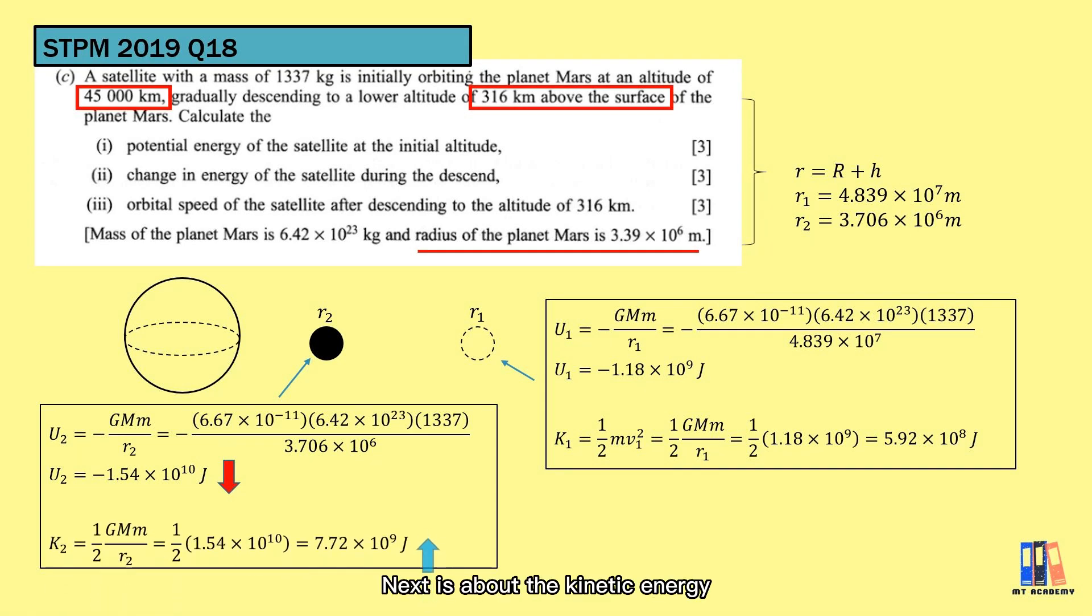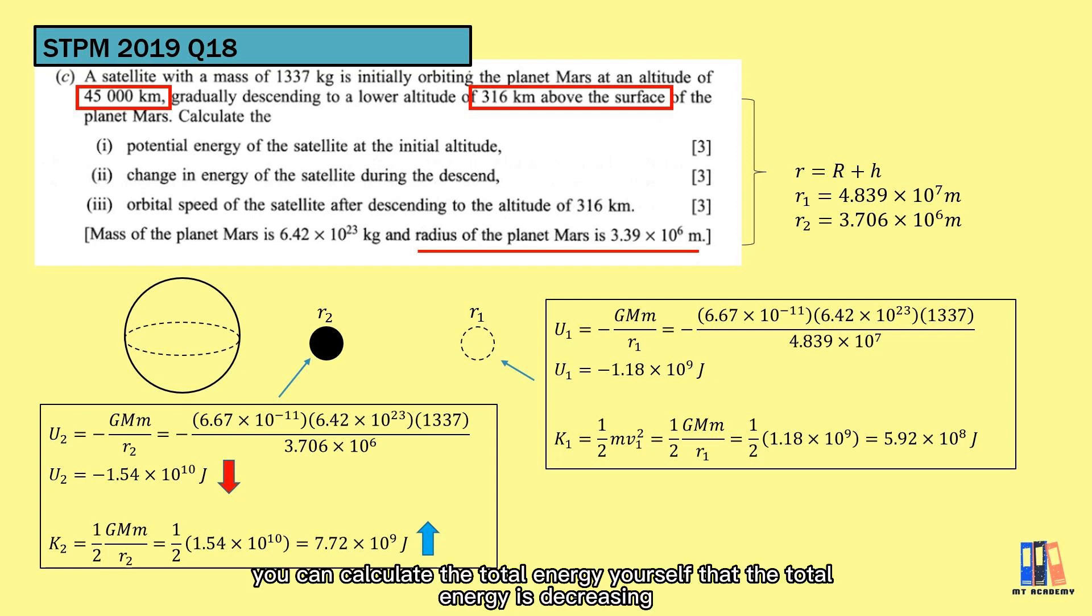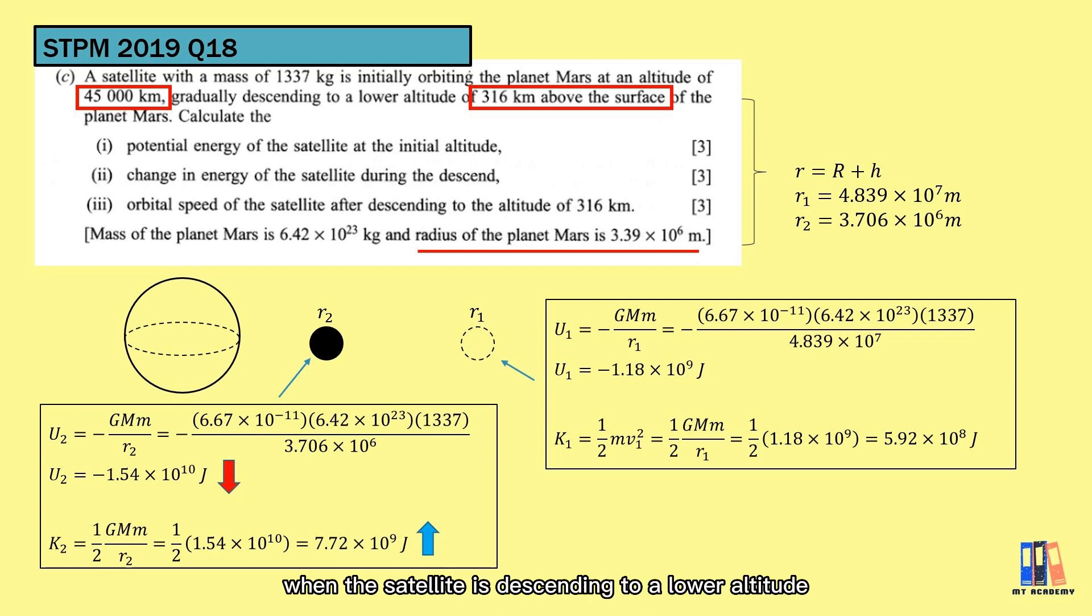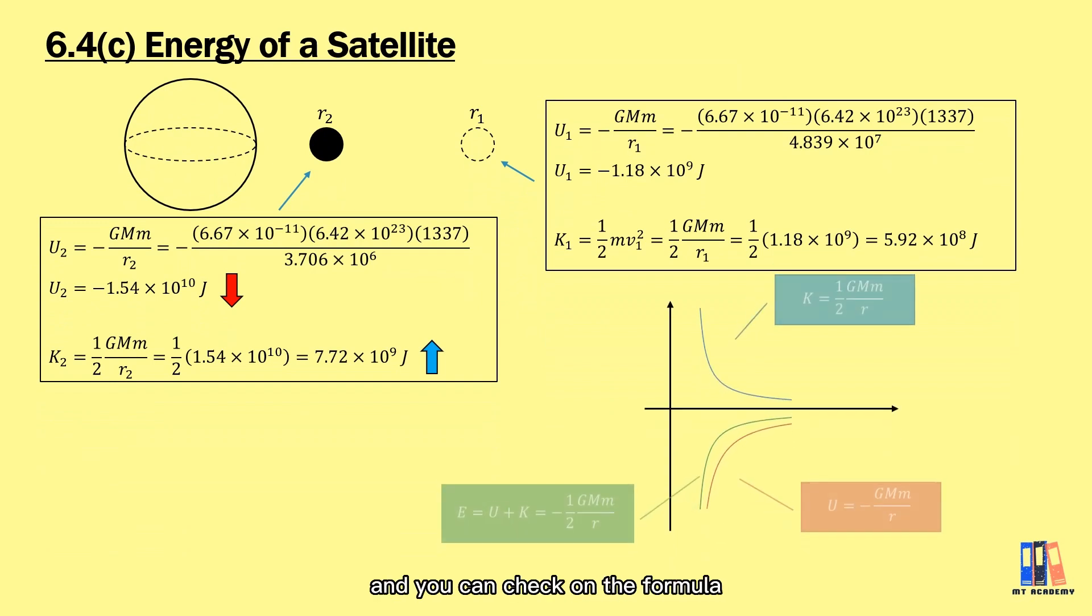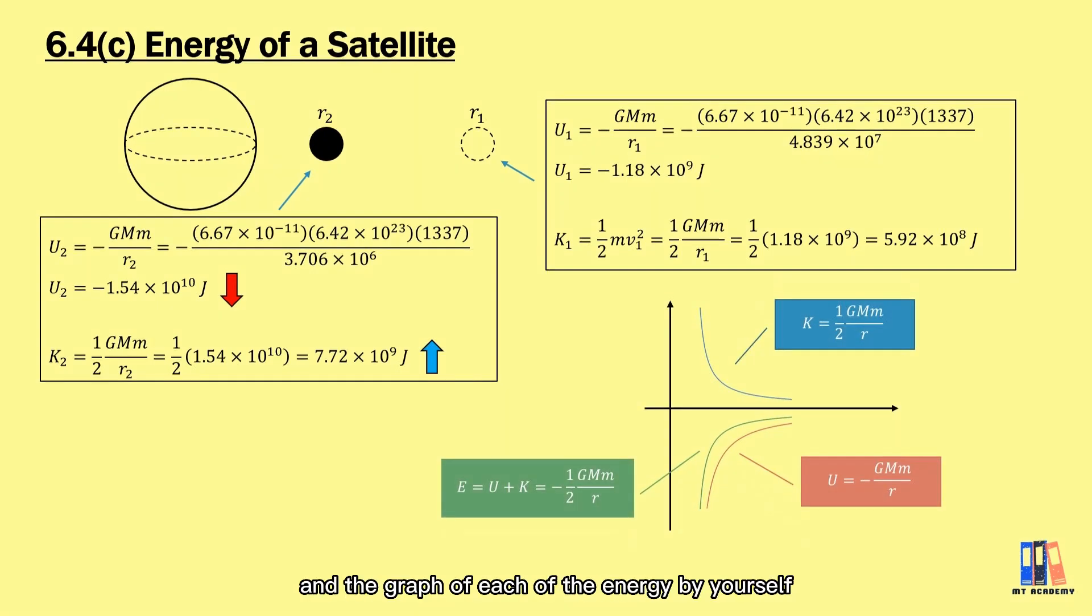Next is about the kinetic energy. As you can see that the new kinetic energy is 7.72 × 10¹² joules, which is higher than the old kinetic energy. This could be explained by stronger gravitational force when it is nearer to the mass. It must move faster, else it will be pulled toward the planet. Overall, you can calculate the total energy yourself that the total energy is decreasing when the satellite is descending to a lower altitude. To illustrate the changes, the graph is here and you can check on the formula and the graph for each of the energy yourself.